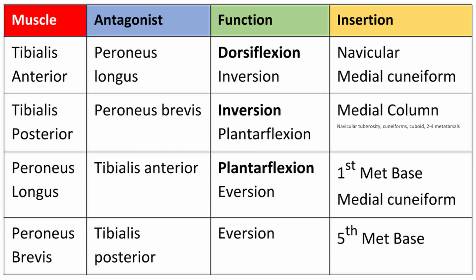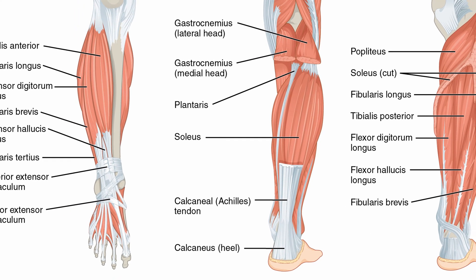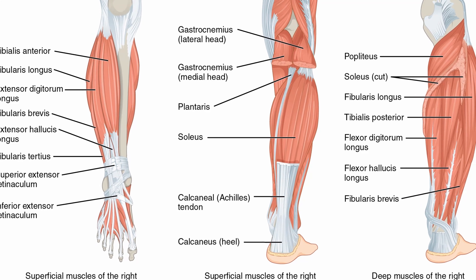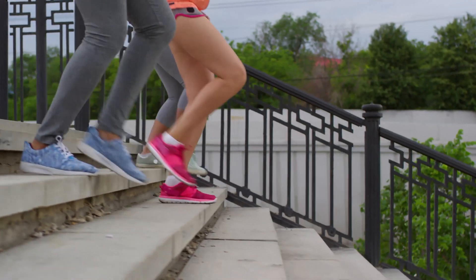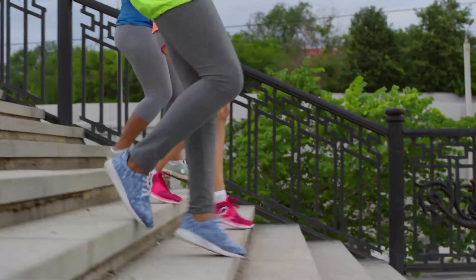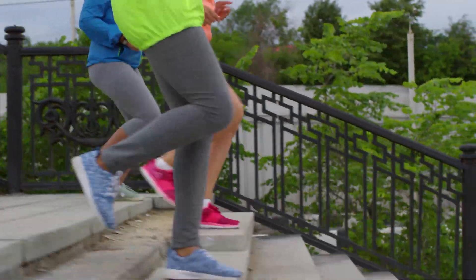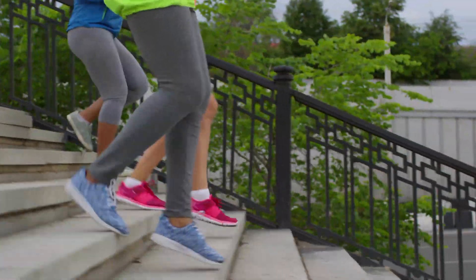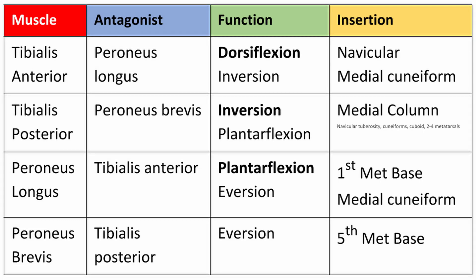This video draws upon our knowledge of anatomy, both the origin and insertion of various muscles of the foot and ankle. Make sure you check out my video on biomechanics and the gait cycle. We're going to be talking about four major muscles of the foot and ankle during the gait cycle that drive the foot during gait. Make sure that you know the origin and insertion of each of these muscles.